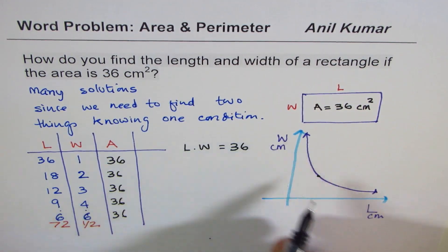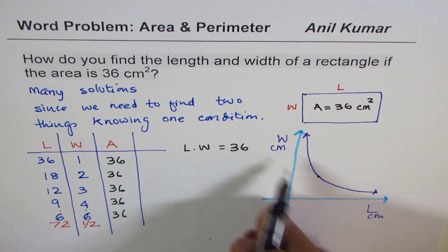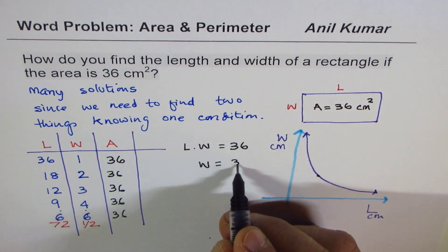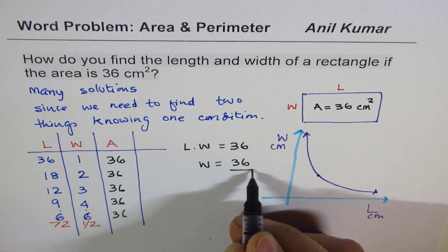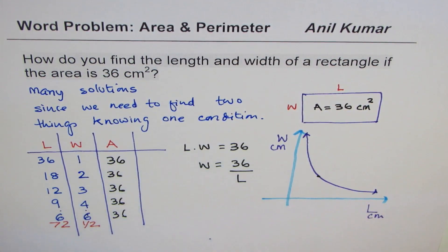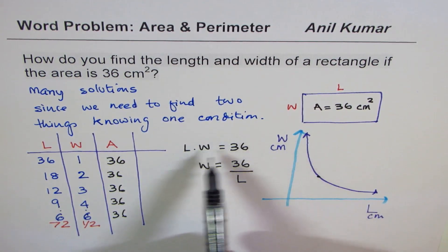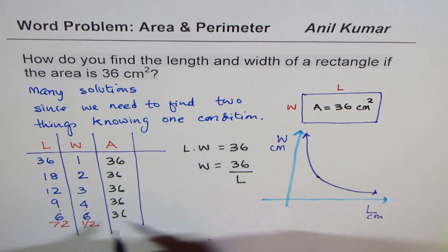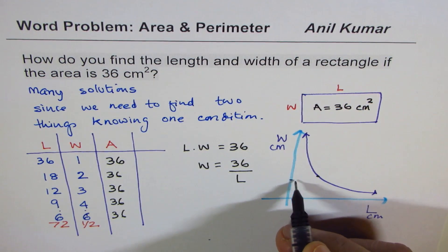So what we are trying to say here is that length times width is equal to 36. And we have taken width as a function of L, related to L. So we can say width is equal to 36 over L. So depending on different values of L, we can get different values of width, and we can make our graph.